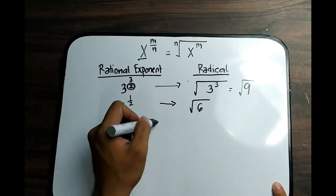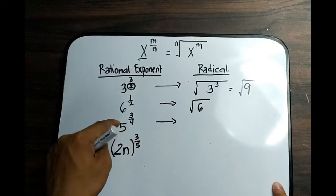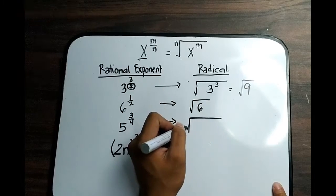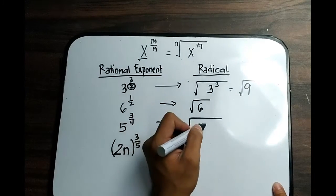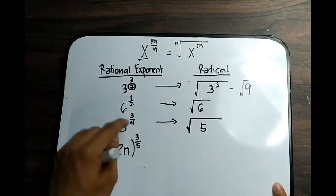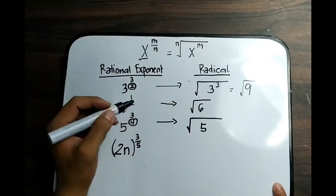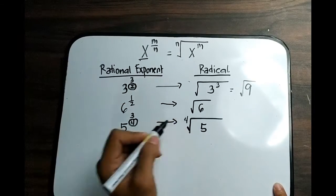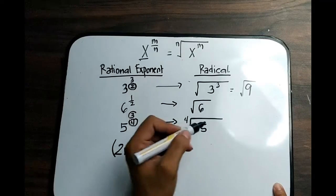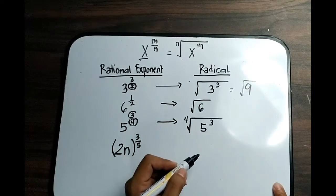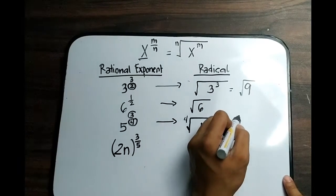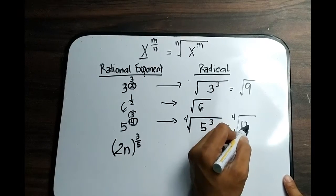For number 3, we have 5 raised to 3 over 4. Write the radical symbol with 5 as your radicand, since the base is 5. Since the denominator is 4, this is a 4th root. The numerator 3 becomes the exponent of your radicand, and simplifying 5 raised to 3 gives the 4th root of 125.